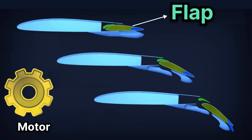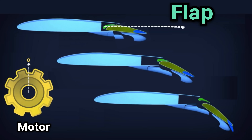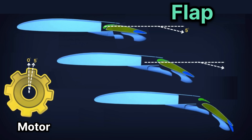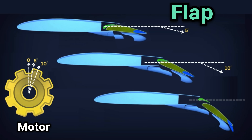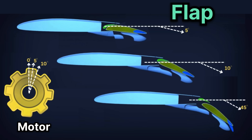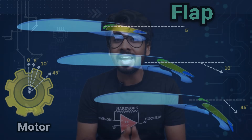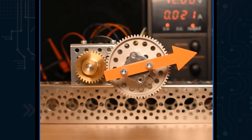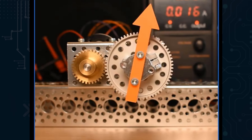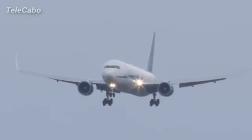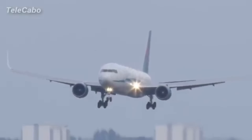This flap is moved using a motor and can be set to 5, 10, 15 and 40 degrees — called flap 1, flap 2, flap 4 landing. The objective for the embedded team will be to control the motor at any particular angle and keep it stable there. Also, there is something called a skew sensor which detects if both flaps are at the same angle, otherwise there will be an imbalance in the frame.